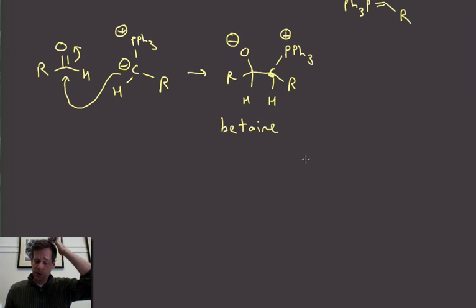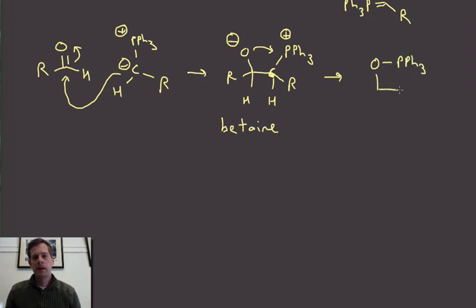Okay and this will sit around for a while. But then eventually what's going to happen is the oxygen and the phosphorus are going to basically link up and form a ring. Okay and that allows this four-membered intermediate to form. Okay H and R. I could put some numbers in here. One, two, just to keep track.